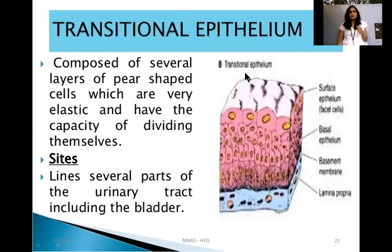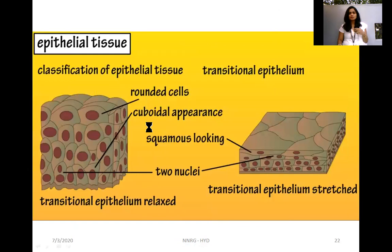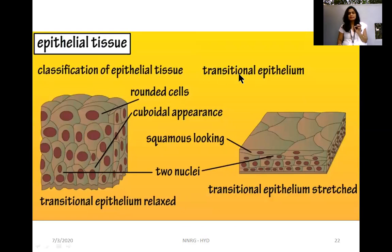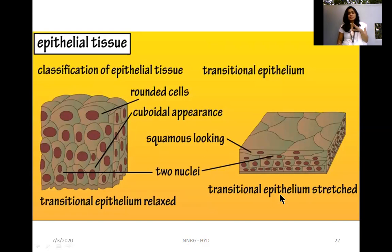Transitional epithelium is composed of several layers of sphere-shaped cells and has the capacity to divide and reproduce. It is present in the lining of the urinary tract, especially the bladder. In relaxed transitional epithelium the cells are rounded or cuboidal and more densely packed, while in the stretched state the cells are flattened and squamous. In both states the cells typically contain two nuclei.